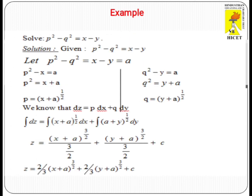For example, solve P² - Q² = X - Y. In this equation, the variables P, Q, X, and Y are all involved, so it is a Type 3 problem. We apply the variable separable method, converting P and X to the left side and Q and Y to the right side, giving P² - X = Q² - Y.